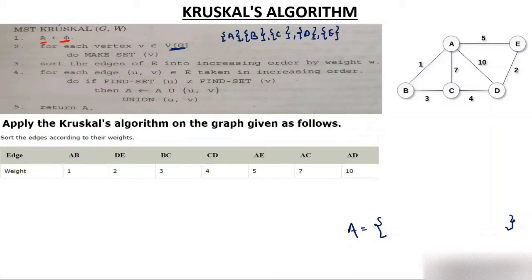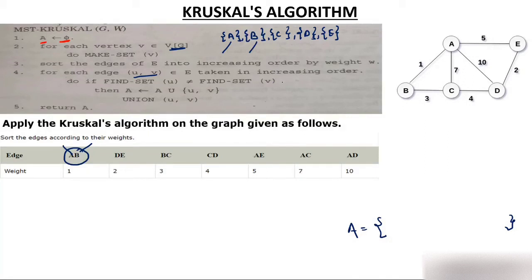Now, for each edge UV taken in increasing order, belonging to E — suppose you are taking edge AB, that is A is U and B is V. Does it belong to E? Yes. Are you taking it in increasing order? Yes. Now check: is Find-Set(U) not equal to Find-Set(V)? The condition checks whether A and B are in different sets.